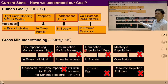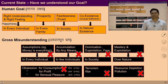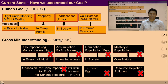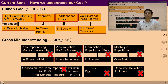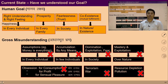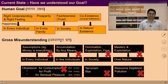At the level of the individual, there is an assumption that money is everything, leading to accumulation by any means. This results in domination, exploitation, and fear in society, reflected in terrorism and war. Similarly, we are trying to master and exploit nature unknowingly, and the outcome is resource depletion, pollution, and global warming.